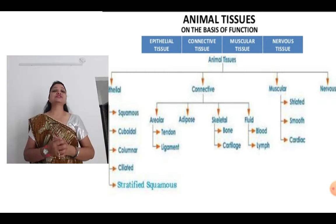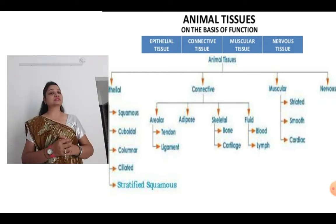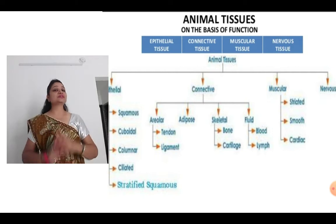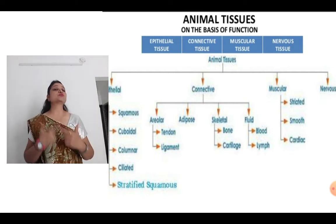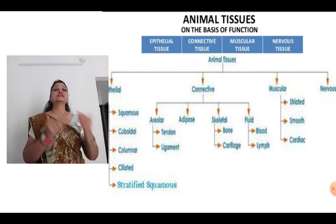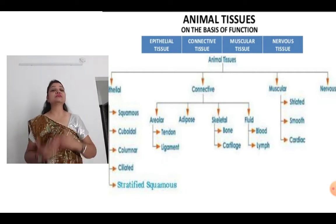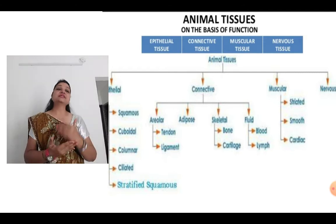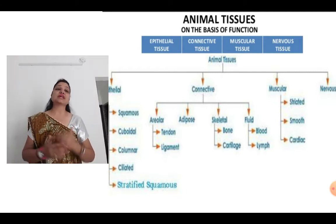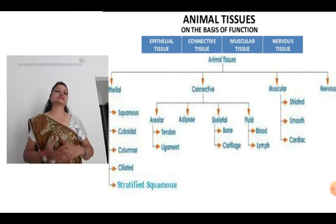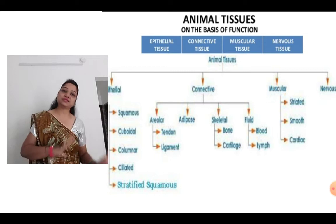We are going to discuss epithelial tissue first. It has subcategories: squamous, cuboidal, columnar, ciliated and stratified squamous. Then connective tissue has areolar, adipose, cartilage and fluid. Then muscular tissue has striated, smooth and cardiac — the types of muscles — and the nervous tissue apart.